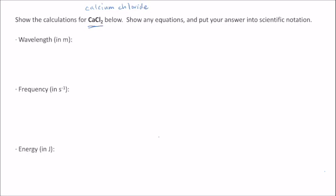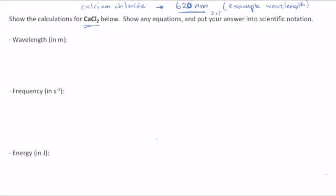Let's say you had seen that the dominant color was equivalent to a wavelength of 620 nanometers. This is an example wavelength — you're going to choose the dominant color and equivalent wavelengths from the table in your lab procedure. I chose this number because I want to show you what happens when you have that zero, which indicates that this number value has only two sig figs, because that zero is not significant without a decimal. So you have 620 nanometers.